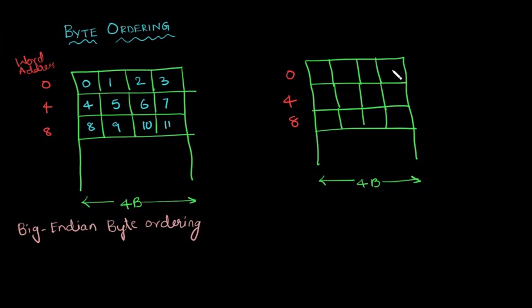Let's make the cells to represent each byte. Now let's see. In this scheme, the byte ordering starts from the rightmost side. That is, 0th byte is here, 1st byte is here, 2nd byte is here, 3rd byte is here.